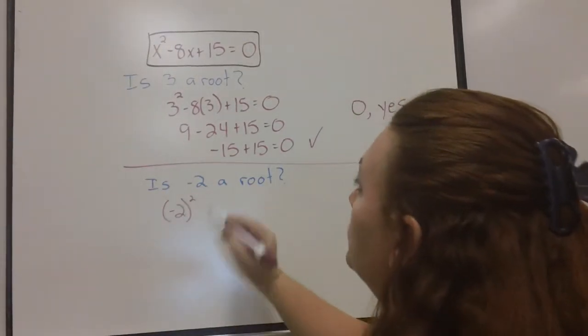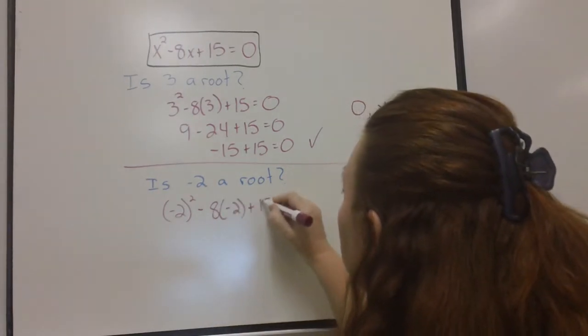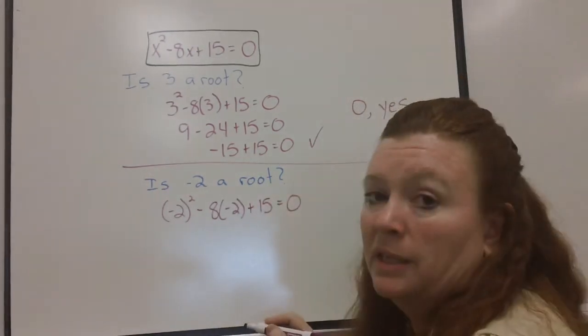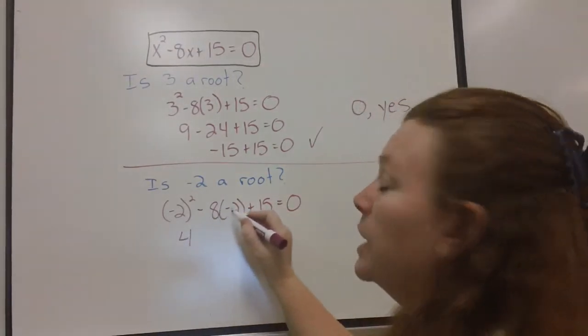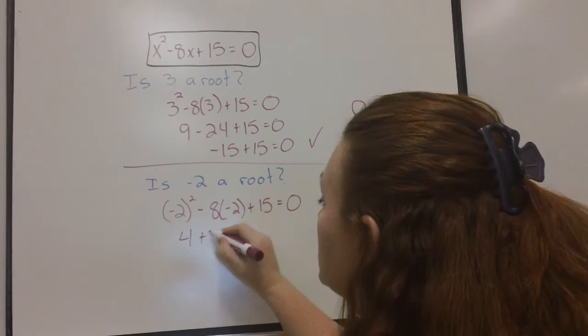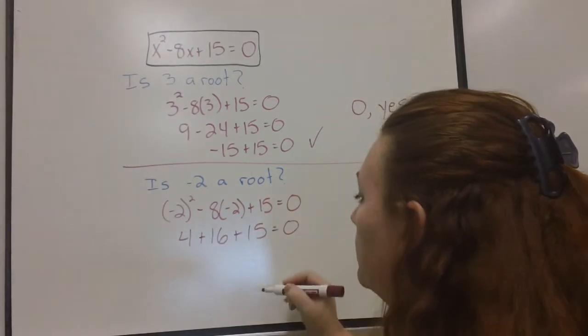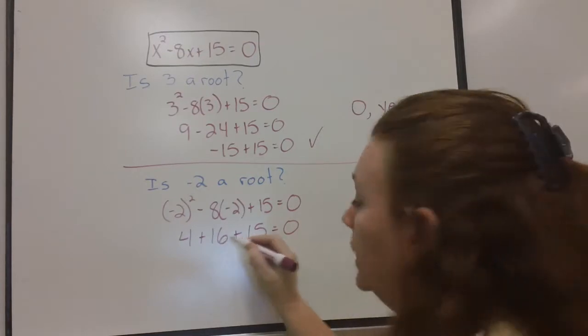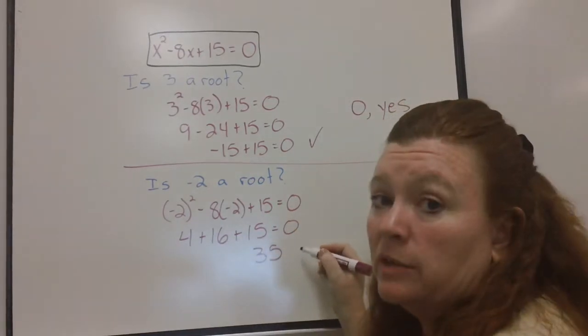Negative two squared minus eight times negative two plus fifteen equals zero. Negative two squared is four. Minus eight times a minus two is a plus sixteen. Four plus sixteen is twenty plus fifteen is thirty-five. Does that equal zero? No.